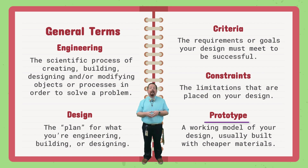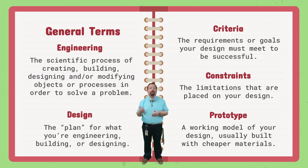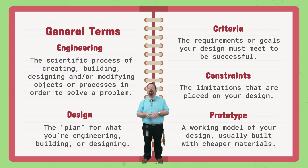A prototype is a working model of your design, usually built with cheaper materials. For the junior high robotics team, we'll often build different arms, intakes, or shooters without building them directly on the robot first, just to test out the design to see if it'll work. Often a prototype is used as a proof of concept — a way to prove that the design does what it's supposed to do mechanically, before you spend all the time and money to build it for real.